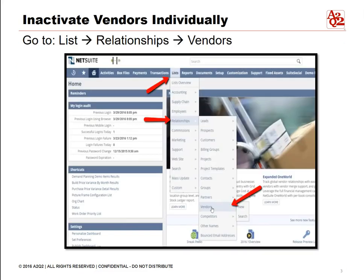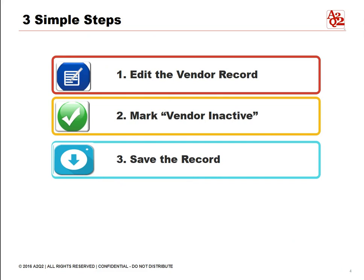To inactivate a vendor record individually, go to the list tab, highlight relationships, and then click vendors. Follow these three simple steps: one, edit the vendor record; two, mark vendor inactive; and three, save the record.